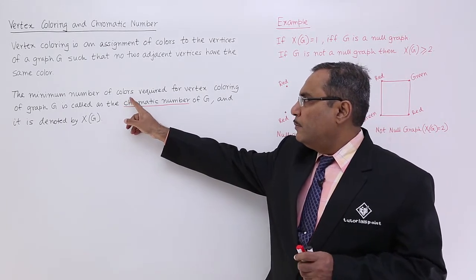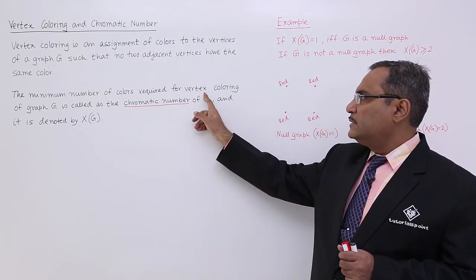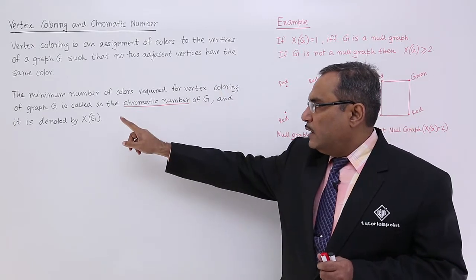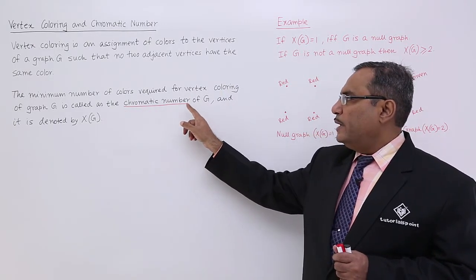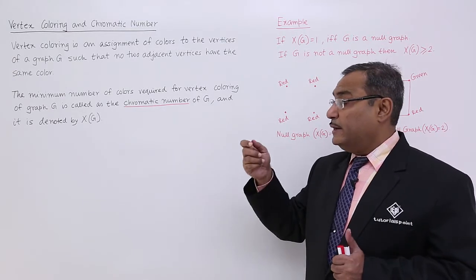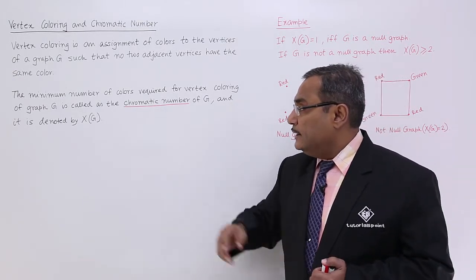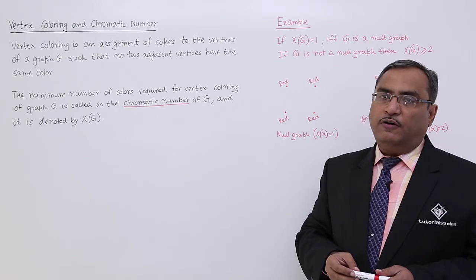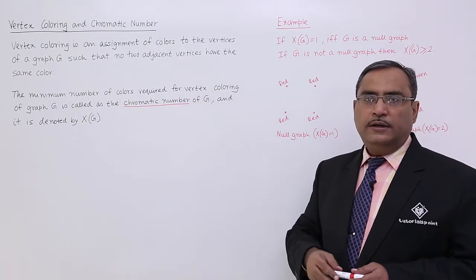The minimum number of colors required for the vertex coloring of graph G is called as the chromatic number of G. That is the number of distinct colors required, and it is denoted by χ(G). This is the definition.